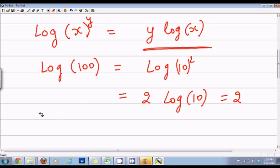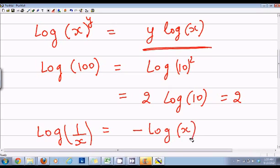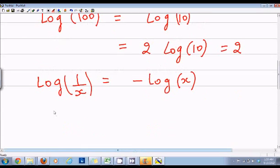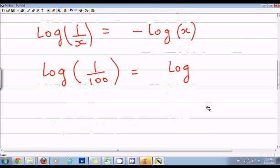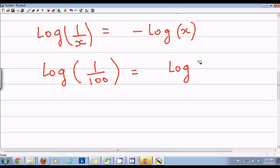Now the third property is log of 1 over x is equal to negative log of x. So if you look again, if we have a log of 1 divided by 100, that is equal to log of 10 raised to power minus 2, or equal to minus 2.